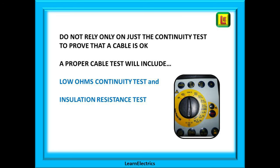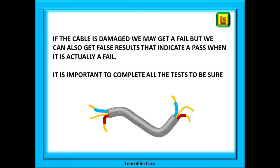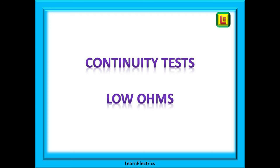We should not rely on just one test — the continuity test — to declare that a cable is okay. A full set of tests will include the low ohms continuity test and the insulation resistance test. If the cable is damaged we may get a fail, but we can also get false results — perhaps double fails that indicate a pass when it is actually a fail. It is important to complete all the tests to be sure the cable is in fact okay, and we should always begin with the continuity or low ohms test.